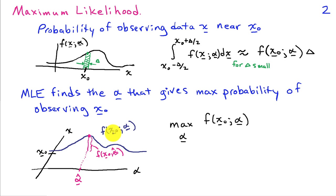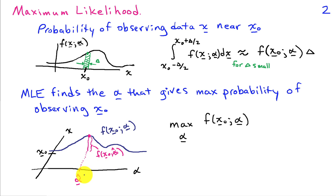So what we do in maximum likelihood estimation is try to find the alpha that gives us the highest probability of observing some value x naught. We think of the probability density function as depending on alpha, and we substitute the observed value x naught in. This gives a function that depends on alpha, and we find the alpha hat that maximizes it. The size of that maximum is f(x naught; alpha hat).